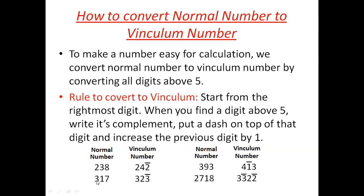Next example: 317. Start from the rightmost digit. 7 is above 5, so take its complement. Complement of 7 is 3. Put a bar on top and add 1 to the previous digit: 1 + 1 = 2. Since 2 is less than 5, it remains as it is. Next digit, 3, is also less than 5, so it remains as it is.